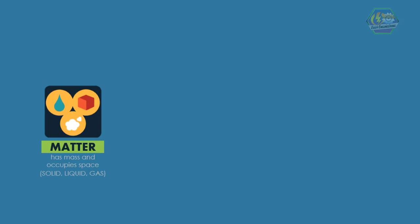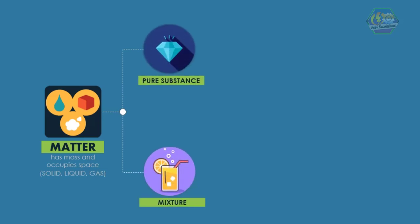Matter is divided into two categories. It occurs in nature as pure substance or mixture. A pure substance is any matter that has a fixed chemical composition and characteristic properties. But when two or more substances are mixed together, the result is called mixture.